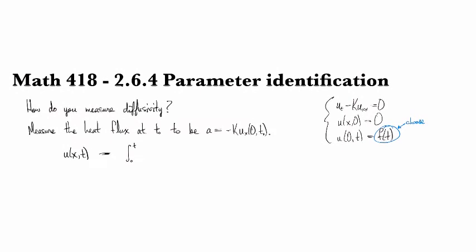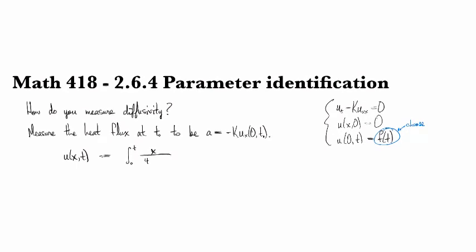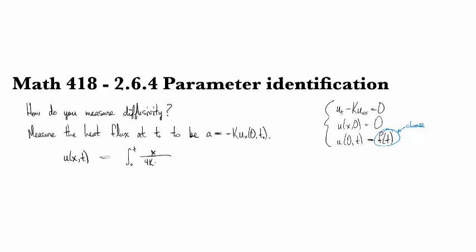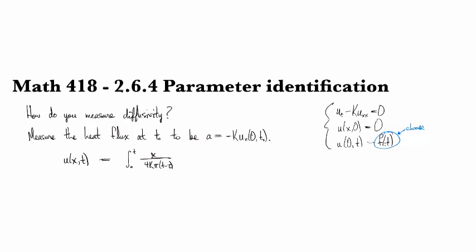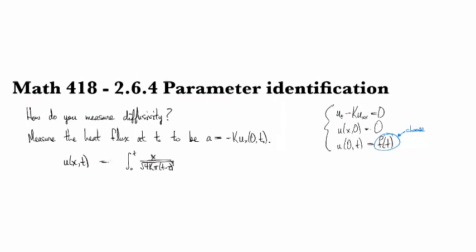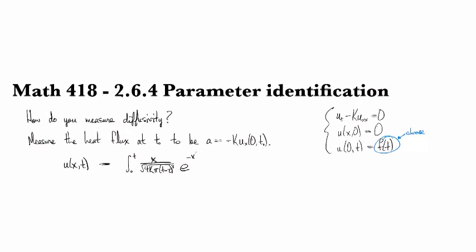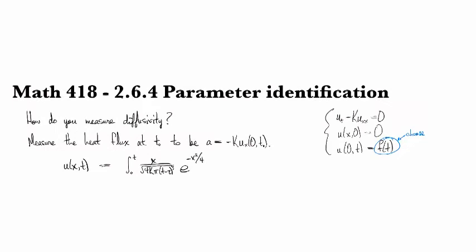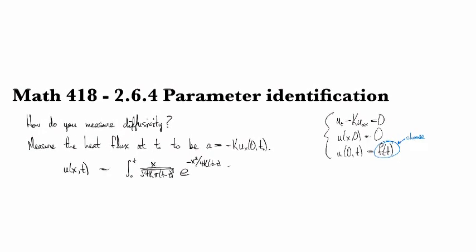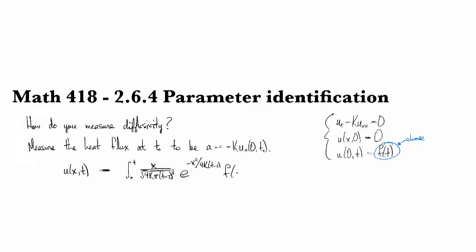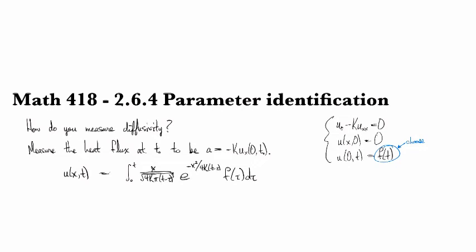And see how it changes when we incorporate a k in there. Because before we had k equal to 1. And the first place it appears is right here in the denominator as sort of the scaling factor for the denominator. It also shows up in the denominator of the exponent right here, t minus tau. And then we had our f of tau d tau, our forcing function that we put in there.